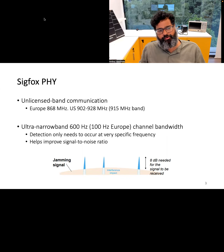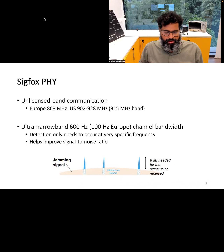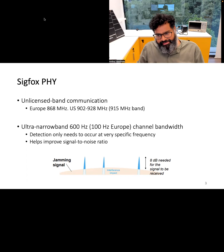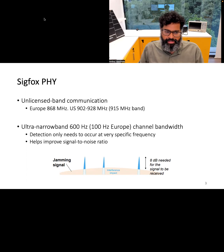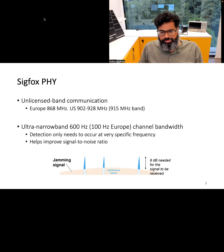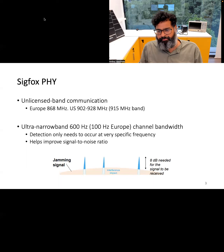Looking at the physical layer of Sigfox, this protocol operates in the unlicensed frequency band in the sub-gigahertz range. Operation in the sub-gigahertz band enables long range because of the better propagation characteristics of radio waves at lower frequencies. The precise frequency can vary from one region to another. To achieve very high range, Sigfox also generates very narrow band signals of only a few hundred hertz bandwidth.